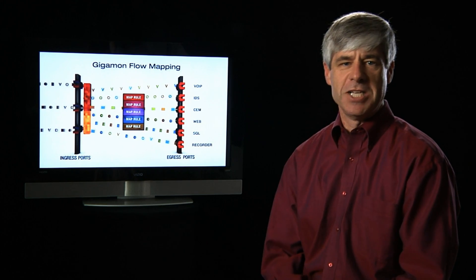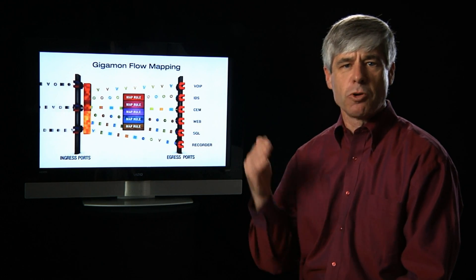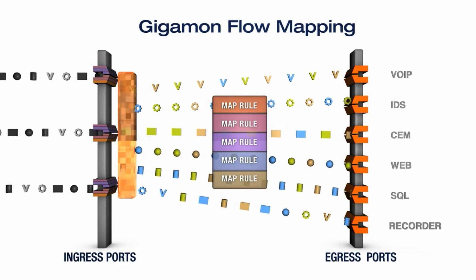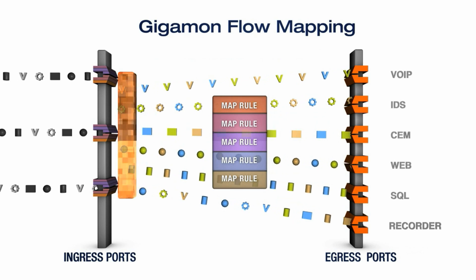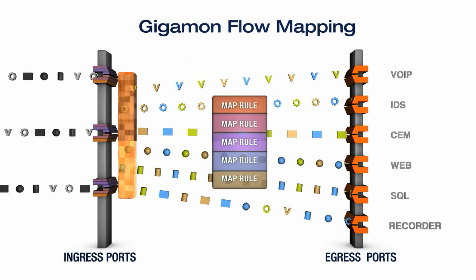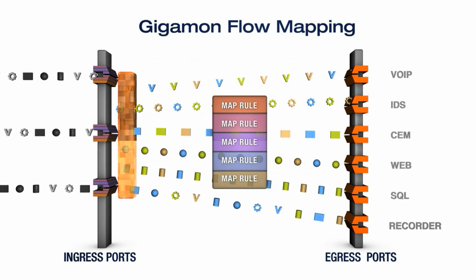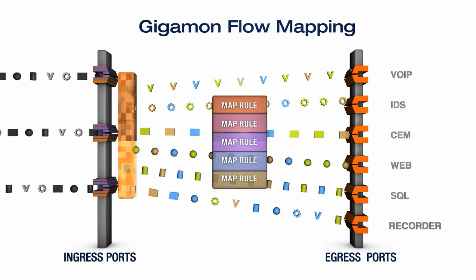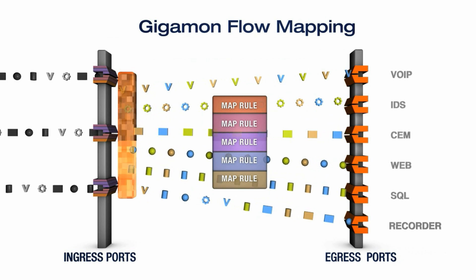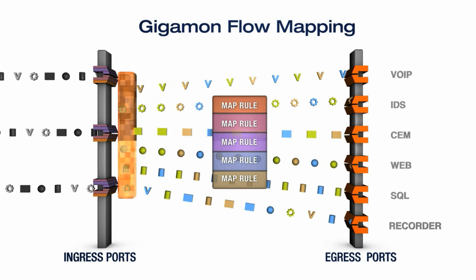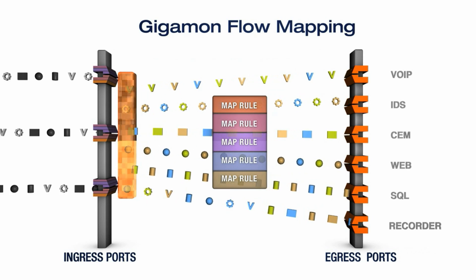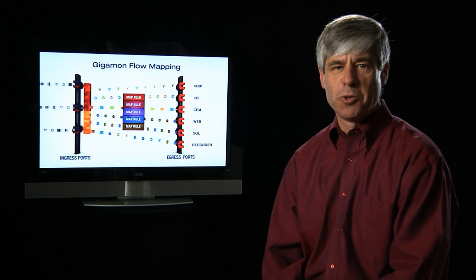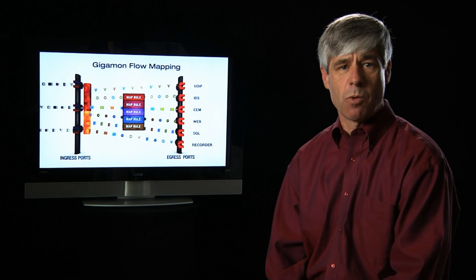A much better solution is flow mapping. Because the rules are applied using hardware, flow mapping runs at line rate speeds. Modifications apply changes to all inputs, allowing rapid redistribution of traffic, and can be used in conjunction with both ingress and egress applications to intelligently distribute traffic loads. As a result, traffic is sent to the appropriate tools in the most efficient way possible. This ensures that no packets are dropped due to over-subscription, and the tool gets exactly the data it requires.